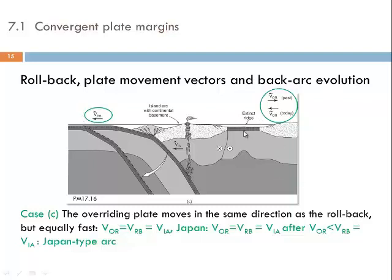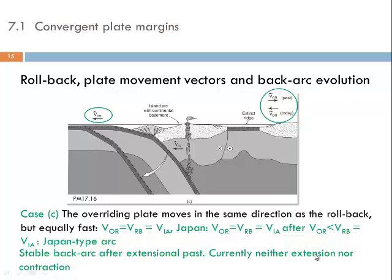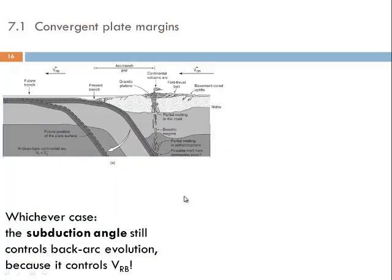The presence of an extensional back arc basin and oceanic lithosphere separating the Japanese islands from Asia means that in the geological history there must have been an episode of back arc extension, with movement vectors opposite between the overriding plate and the rollback. We currently have a stable position showing neither extension nor contraction. The key driving force controlling whether we have fast or slow rollback, or back arc extension, is essentially the subduction angle. A steep subduction angle results in a substantial rollback, while shallow subduction produces a slow rollback velocity.